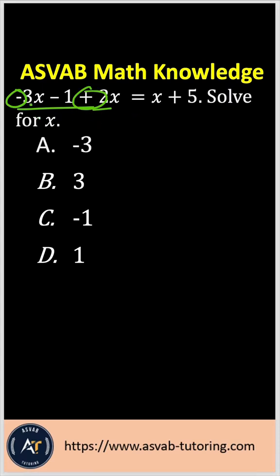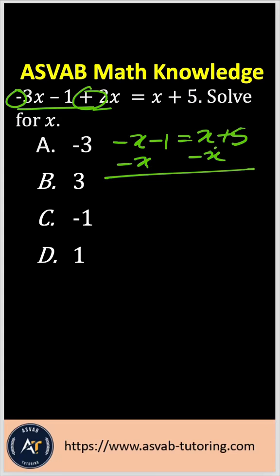So 3x minus 2x gives you negative x, so you have negative x minus 1 equals x plus 5. Now you need to subtract both sides by x to eliminate. The x's cancel out, giving you negative 2x minus 1 equals 5.